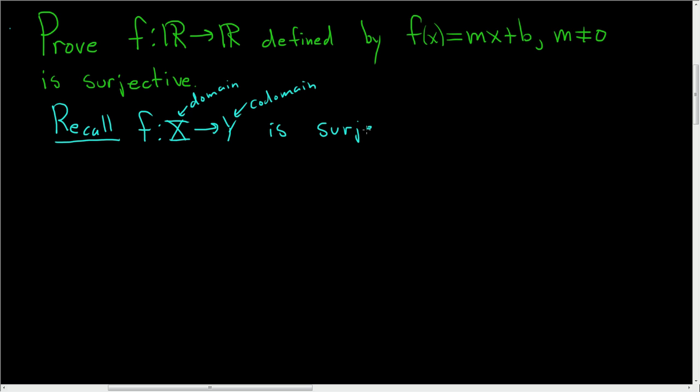if for every value in the codomain, for every little y in Y, we can find some little x in capital X such that f(x) equals y.